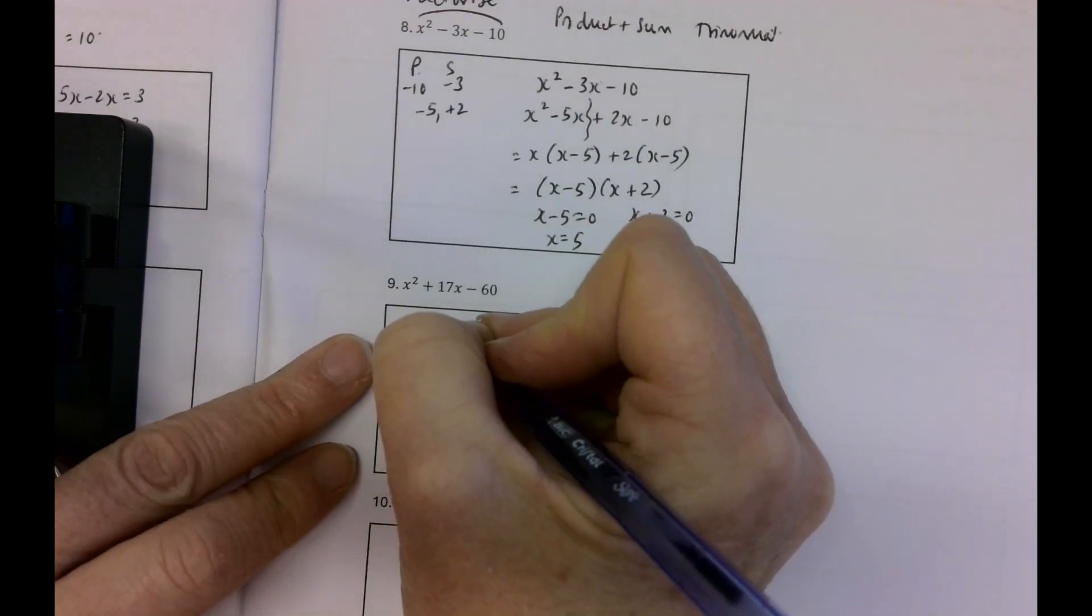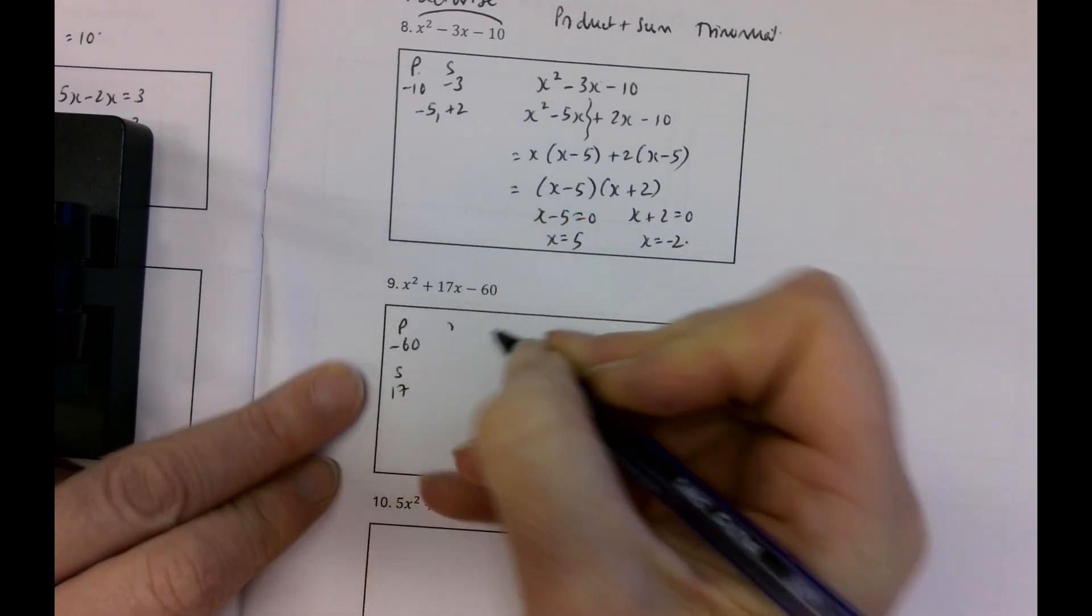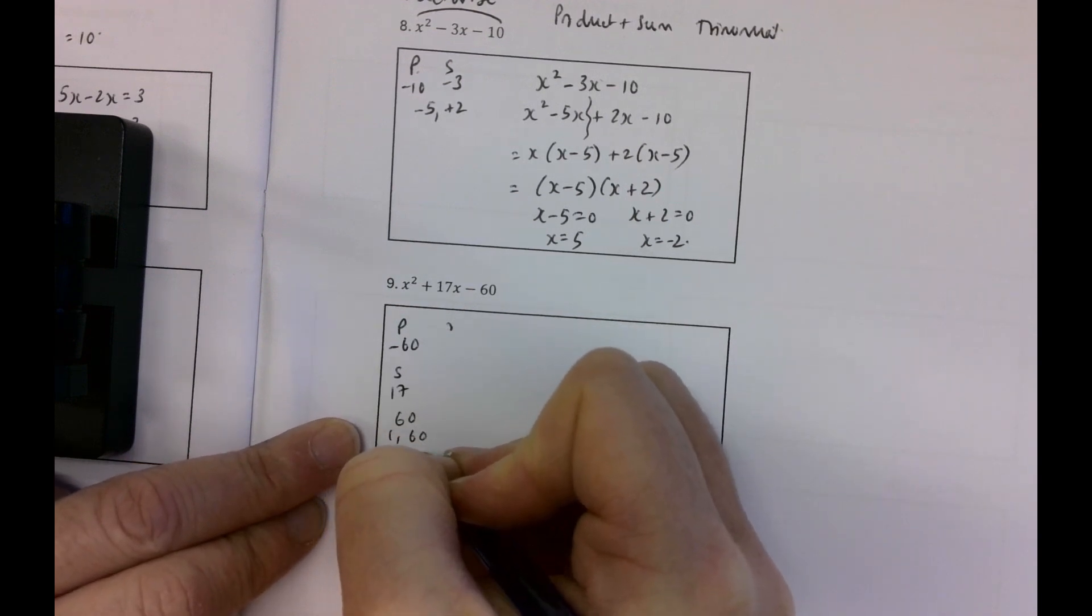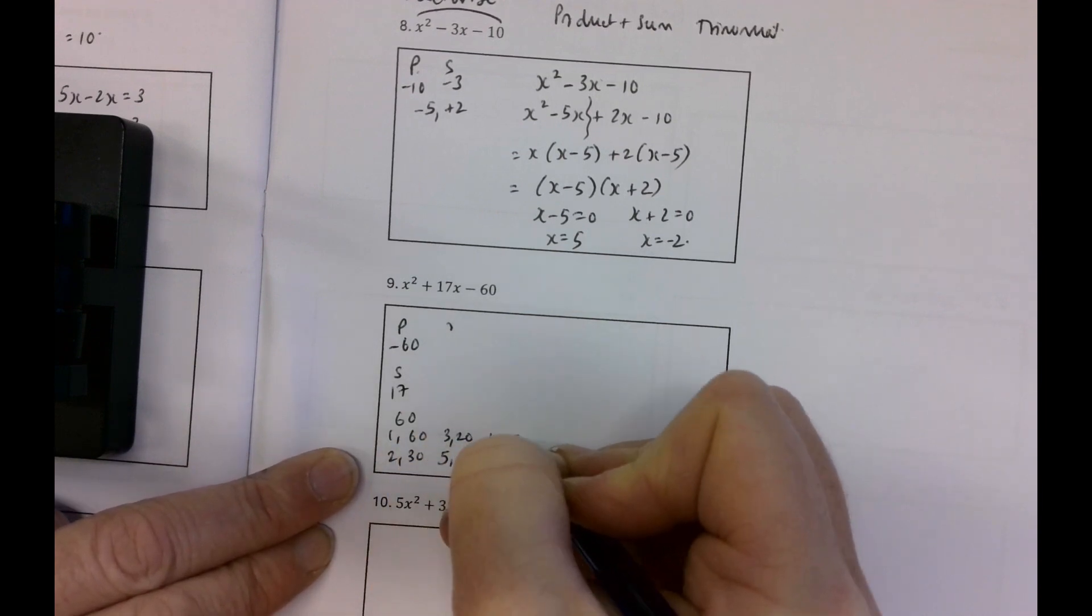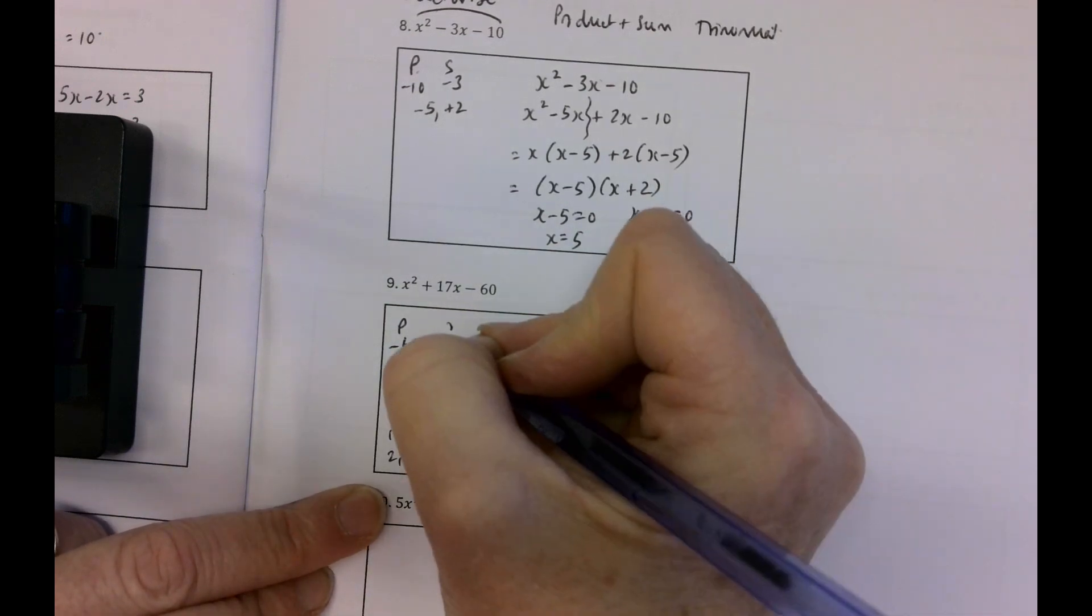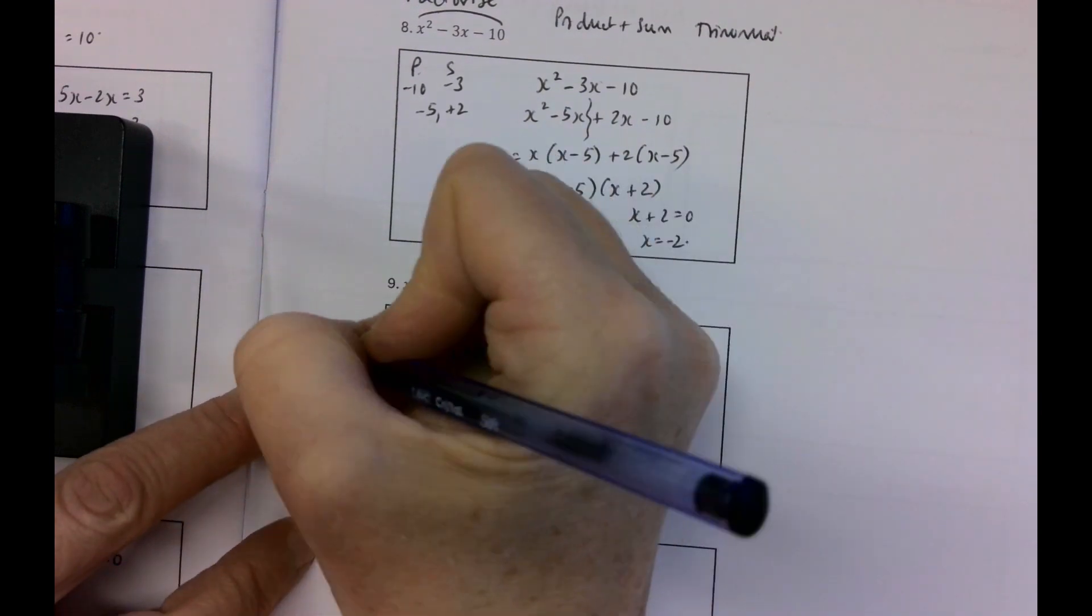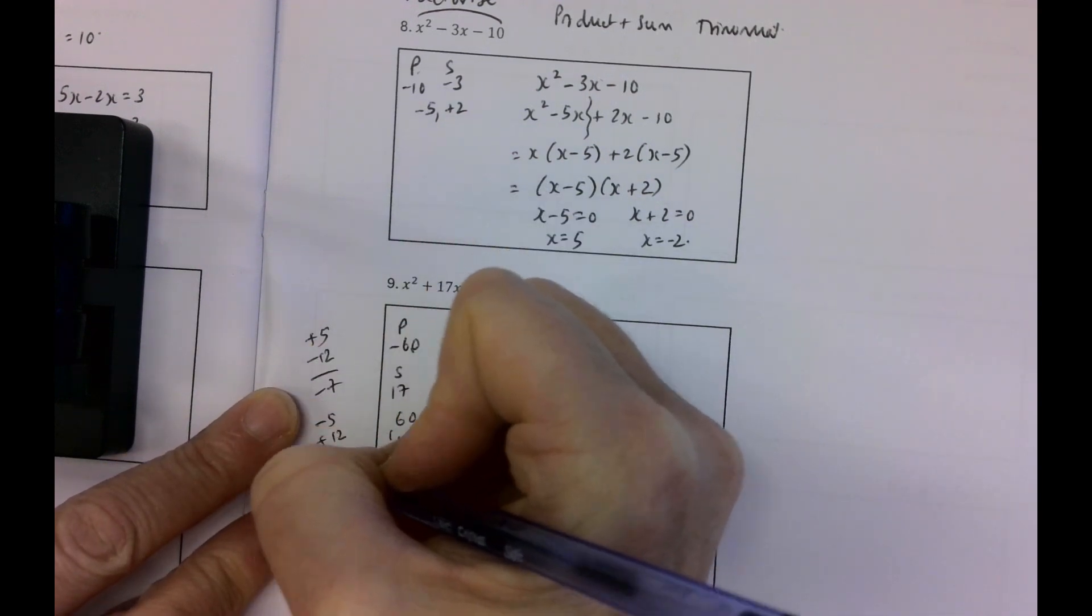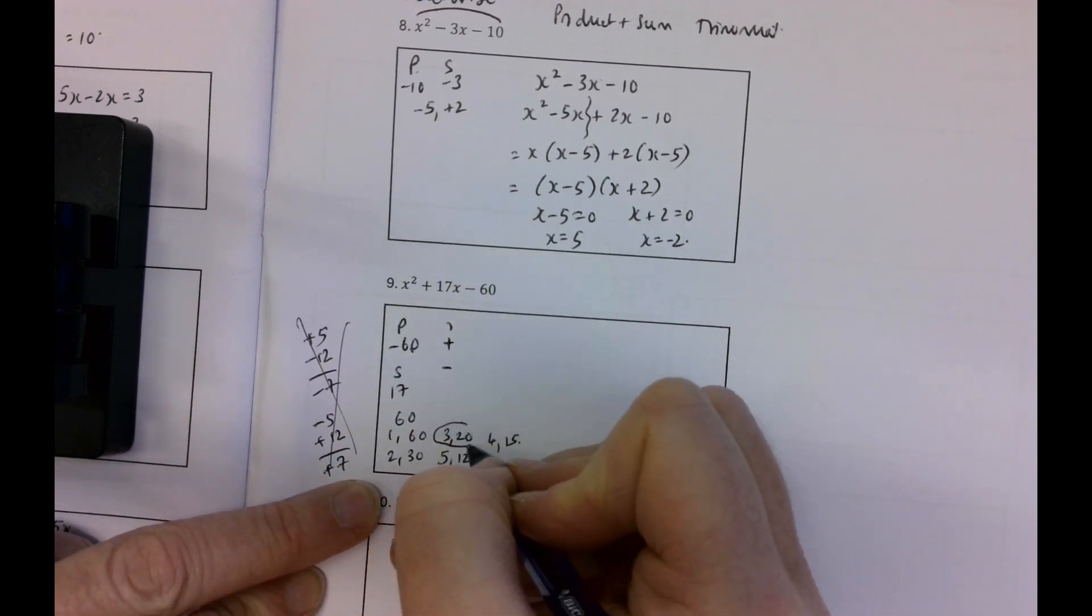x squared plus 17x minus 60. So the product is minus 60 and the sum is 17. So this is quite hard. The factors of 60: 1 and 60, 2 and 30, 3 and 20, 5 and 12, 4 and 15. Now it looks like it should be 5 and 12. But if I'm going to get a minus product one of them has to be plus and one of them has to be minus. If I have plus 5 and minus 12 that's going to give me minus 7. And minus 5 and plus 12 will give me plus 7. So they're not right. Okay so I think it's actually going to be 3 and 20.